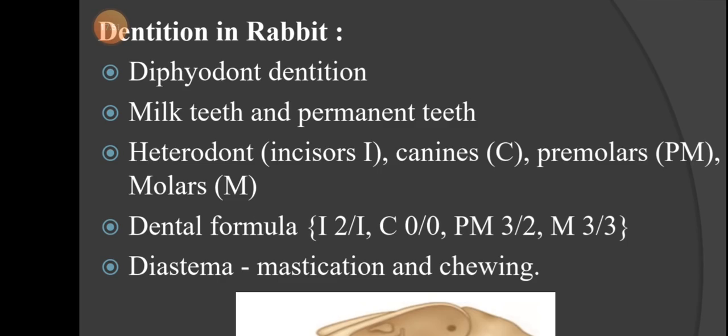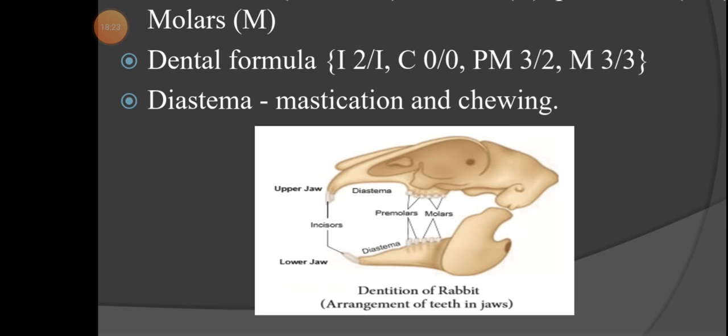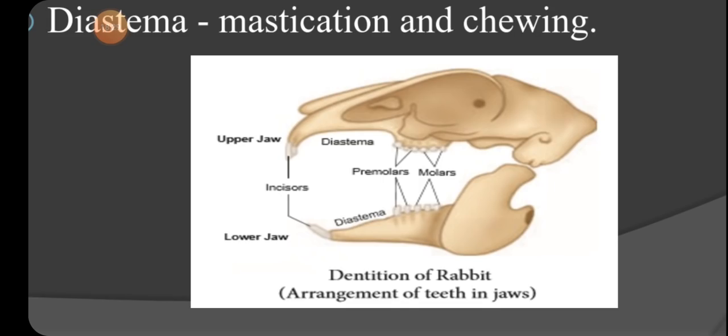The dental formula of the rabbit: incisors — upper jaw 2, lower jaw 1; canines — absent in both jaws (very important: unlike wild animals, rabbits do not have canine teeth); premolars — upper jaw 3, lower jaw 2; molars — upper jaw 3, lower jaw 3. Diastema is the gap between the incisor and premolar teeth where canines are absent, and mastication and chewing occur in this gap.